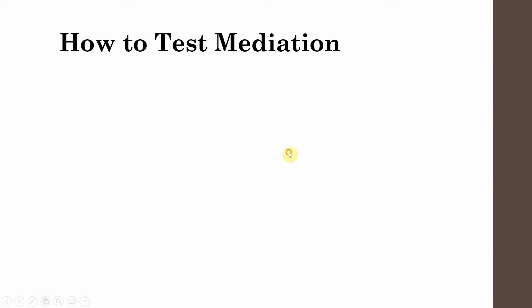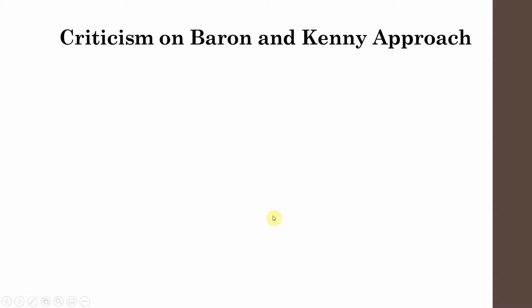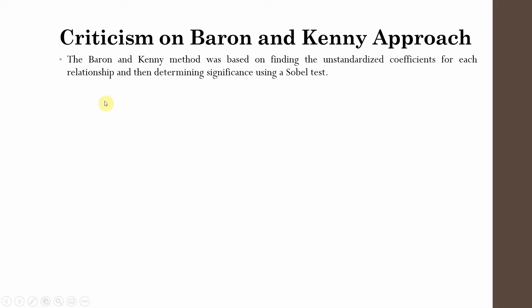How do we test mediation? The research by Baron and Kenny in 1986 was one of the fundamental frameworks for how to test mediation. Over the years, research has refined their initial work. The Baron and Kenny method was based on finding the unstandardized coefficients for each relationship and then determining significance using the Sobel test.